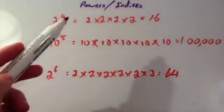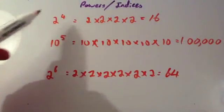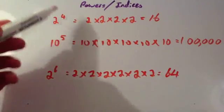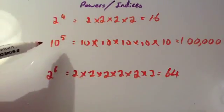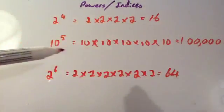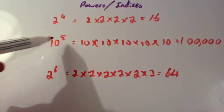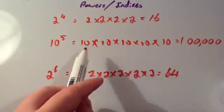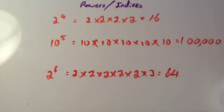You can be asked to work out or evaluate what certain powers are — for example, work out 2 to the power of 4, or evaluate 10 to the power of 5. Sometimes they ask you to write it out in full, such as 10 to the 5 written out as 10 times 10 times 10 and so on, with 5 of them.